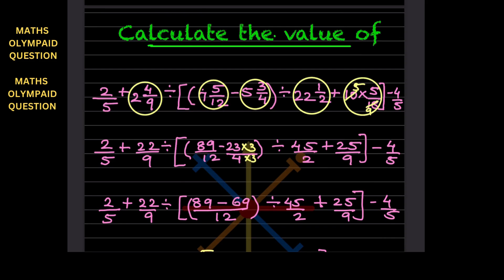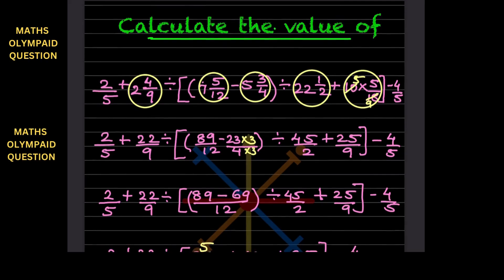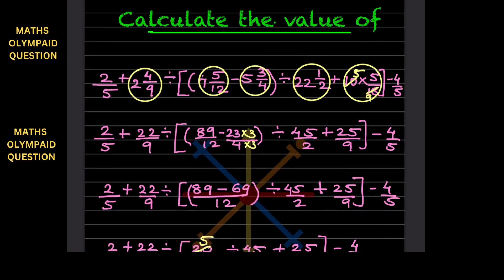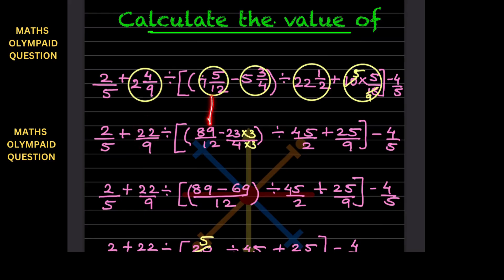We can see many mixed fractions here. We are not going to change any bracket order yet — first we convert all mixed fractions to improper fractions. So 2 and 4/9 becomes: 9 times 2 is 18, plus 4 is 22, denominator stays 9, giving 22/9. Then 7 and 5/12 becomes: 12 times 7 is 84, plus 5 is 89, giving 89/12. And 5 and 3/4 becomes 23/4.